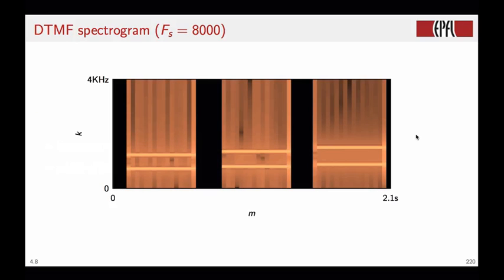So if we apply this to the DTMF signal, which was sampled at 8 kHz, we can label the axis like so. We have a maximum frequency of 4 kHz, and a total duration of the signal of 2.1 seconds.